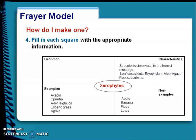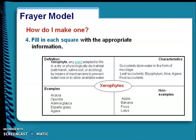Now the next step is putting those characteristics together and defining what is a xerophyte. Xerophyte: any plant adapted to life in a dry or physiologically dry habitat, that is salt marsh, saline soil, or acid bog, by means of mechanisms to prevent water loss and store available water. Such plants are called xerophytes.